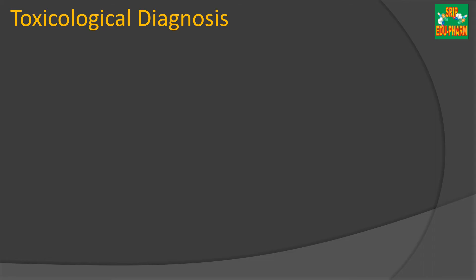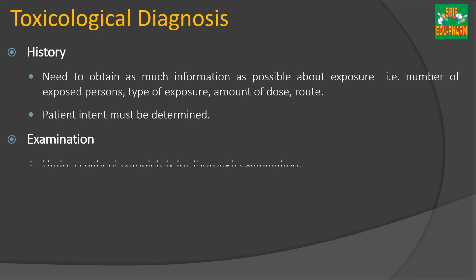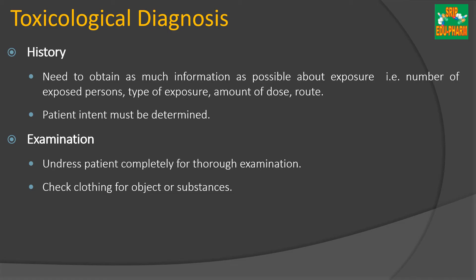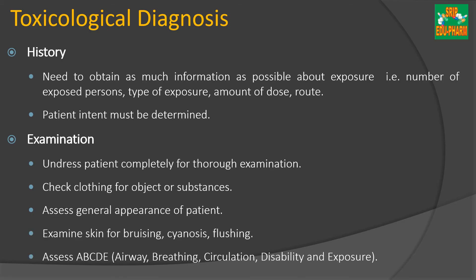Next is toxicological diagnosis, which includes history of the patient and examination of toxic signs and symptoms. History is important to obtain maximum detail about the exposure — the number of exposed persons, type of exposure, amount or dose taken, and the route by which poisoning occurred. The intention of the patient is also identified. During examination, patients are undressed completely for thorough assessment. Clothing is checked for any objects or poisonous substances. General toxic appearance, skin signs like bruising, cyanosis, and flushing are assessed. Airway, breathing, circulation, disability, and exposure — ABCDE — are evaluated.